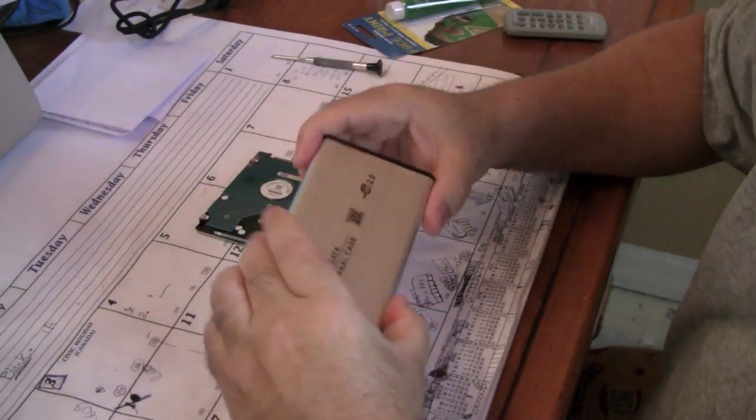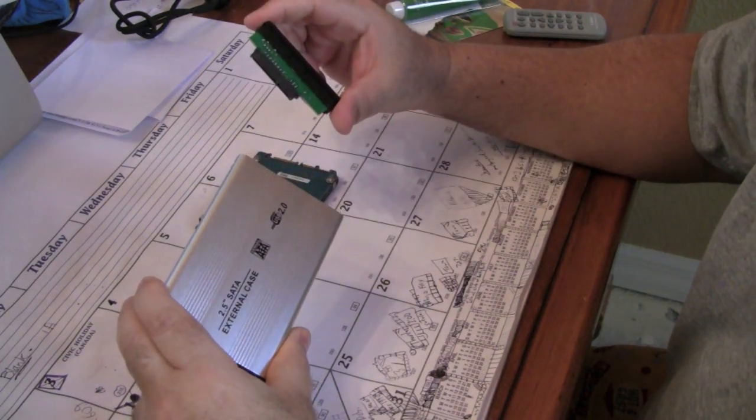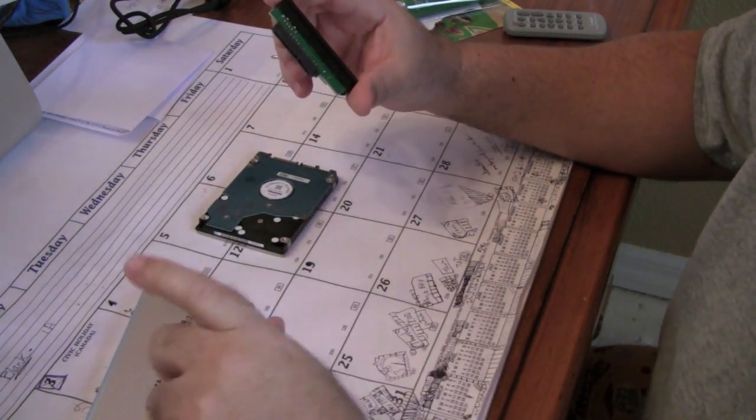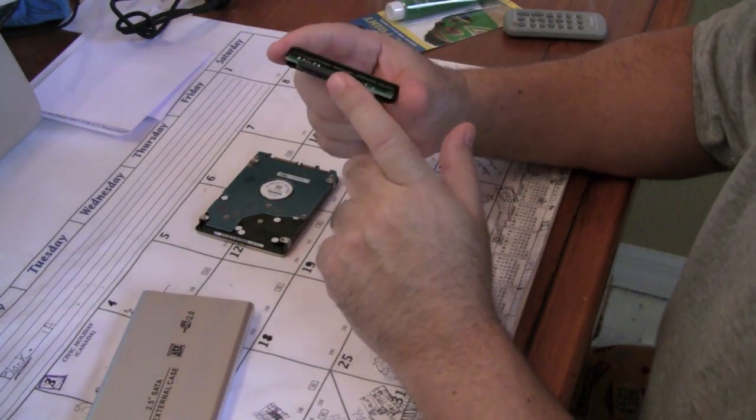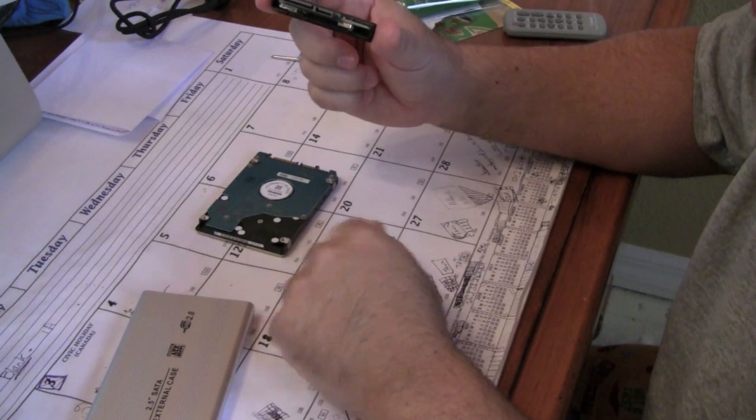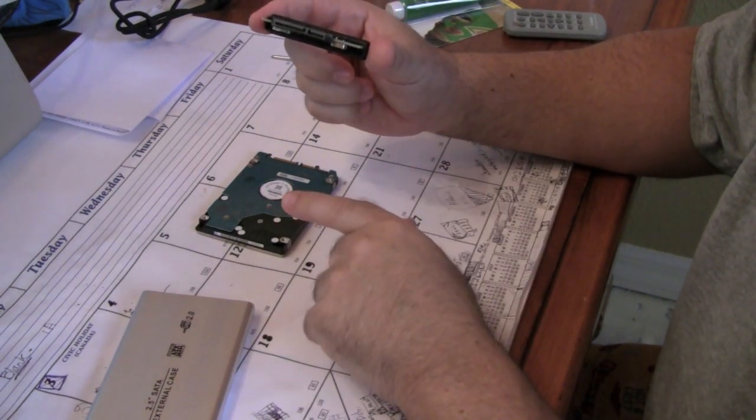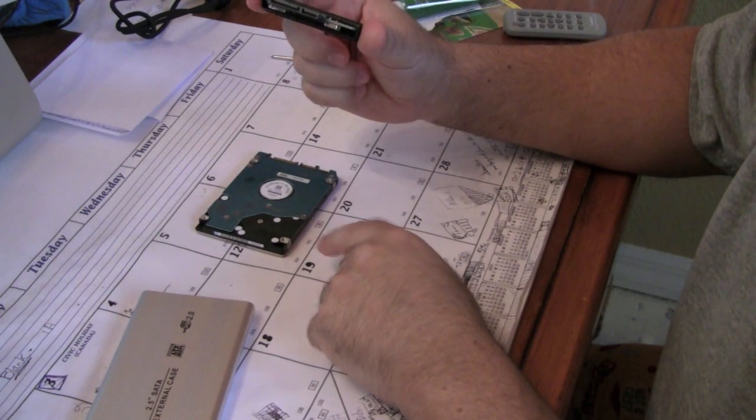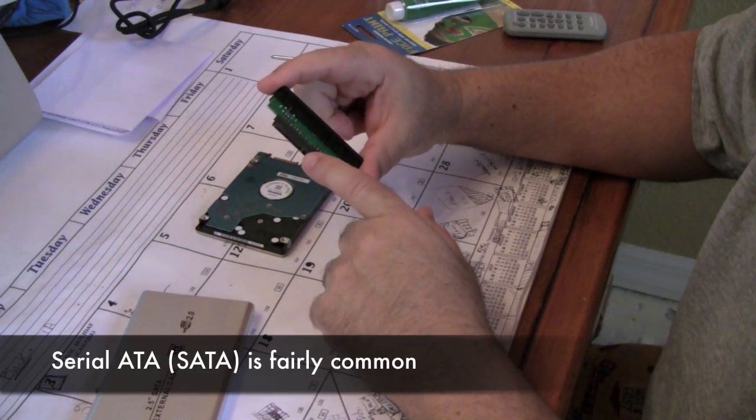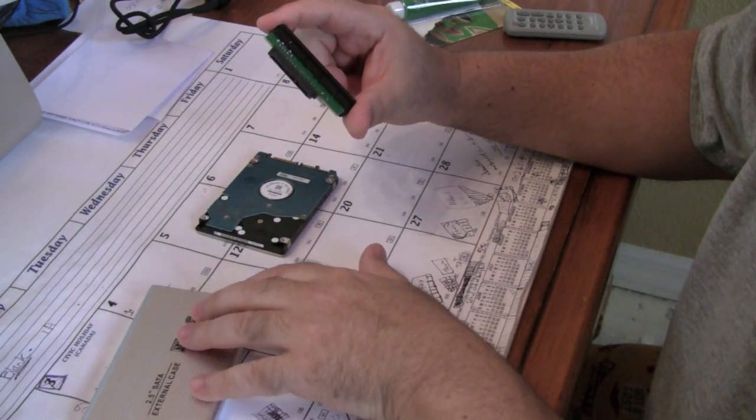Now, here's the case that we're going to use. What you really need to pay attention to is making sure you get the case with the correct interface for the drive that you're pulling out. So the first thing you should probably do is look up the machine you have and find out what the interface is. In this case, this is a SATA, Serial ATA drive, and you'll buy the appropriate case for it.